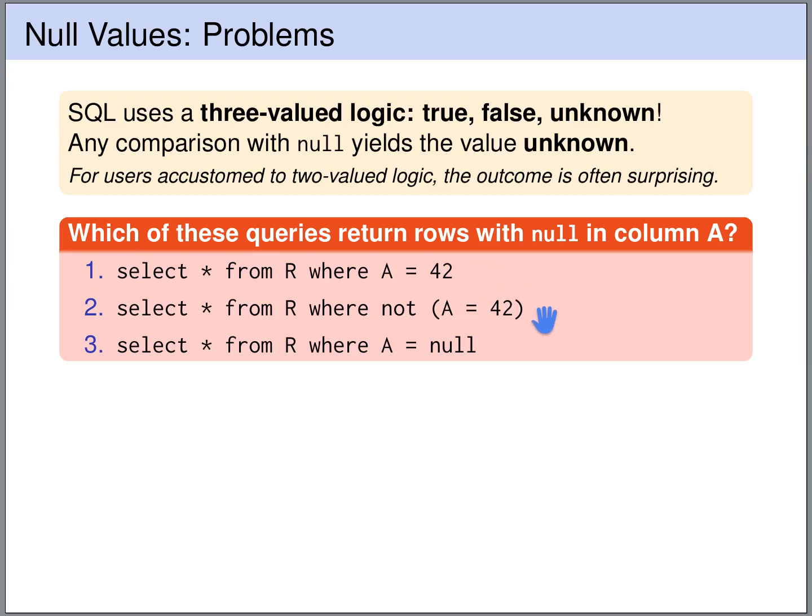The second query returns all the rows from R where A is not equal to 42. If you are used to the usual two-valued logic, then you would expect this query to return also the rows where A is NULL. But it does not. The reason is that the comparison of A with 42, if A is NULL, this will result in UNKNOWN. And NOT UNKNOWN is STILL UNKNOWN.